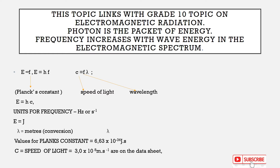The values for Planck's constant h and speed of light are given on the data sheet. Planck's constant is 6.63 multiplied by 10 to the power minus 34 joule-seconds. The speed of light is 3.0 multiplied by 10 to the power 8 meters per second. There is no need to memorize them because they are given on the data sheet.